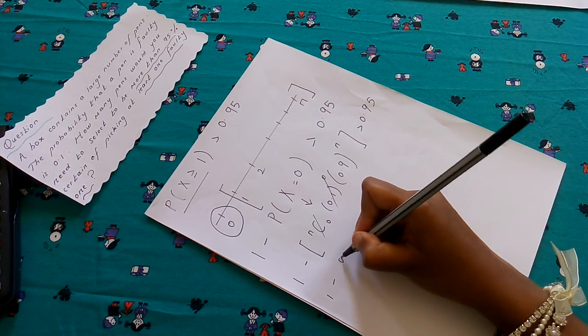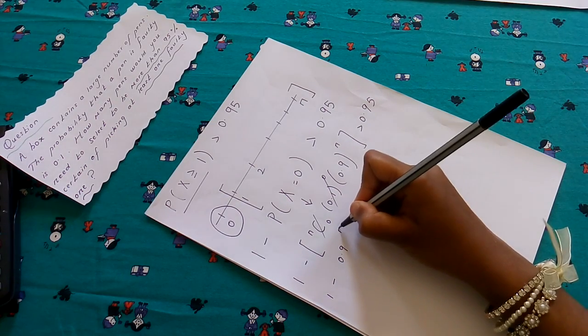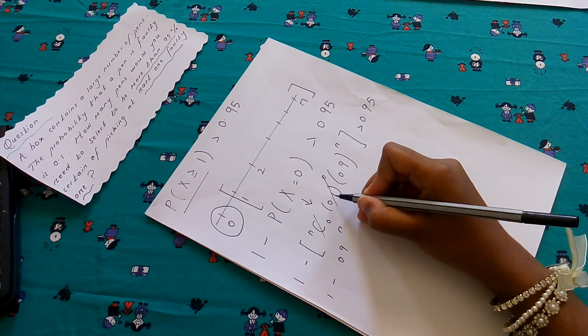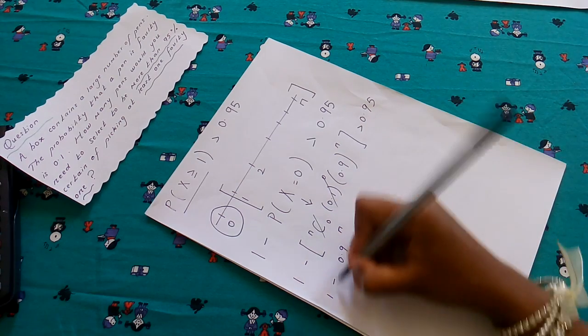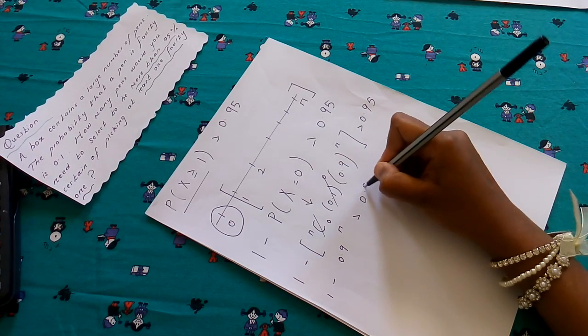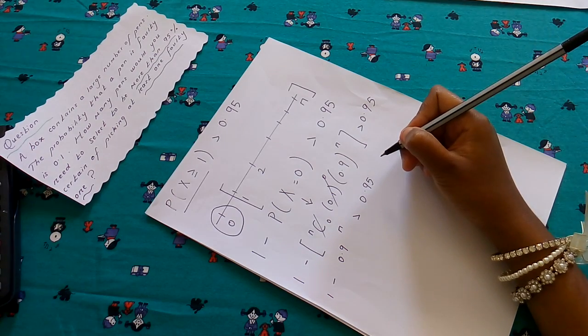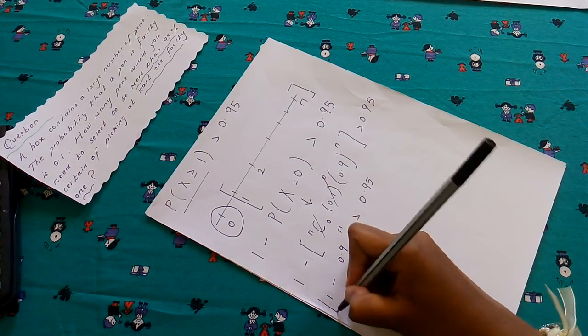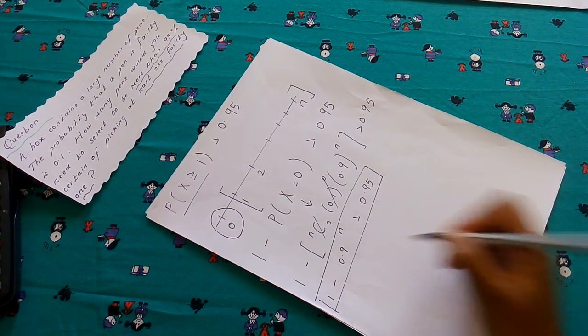Now this and this, we're left with 1 minus 0.9^n. Now 0.1^0 is 1. So we're left with 1 minus 0.9^n is greater than 0.95.